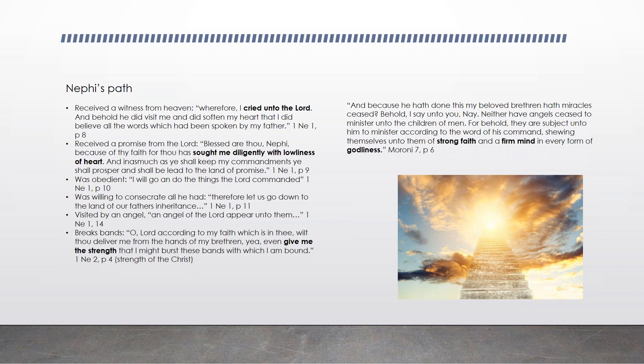Nephi receives a witness from heaven — a guide, an impression, a visit from heaven — thinking about Moses and the record of heaven, the peaceable things of immortal glory, the truth of all things. He receives this witness and continues to be obedient, becoming true and faithful to what he receives. As a result he receives additional knowledge, truth, and goodness. He has tests — he's tested whether he's willing to consecrate all that he has, including leaving Jerusalem and being willing to go back and give up all the gold and precious things his father had.